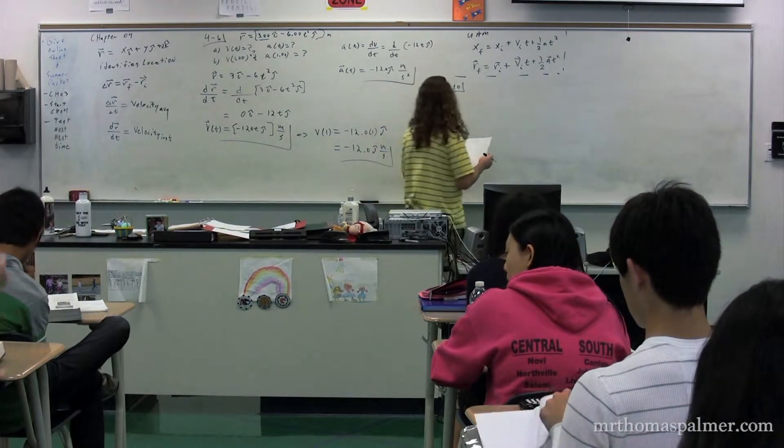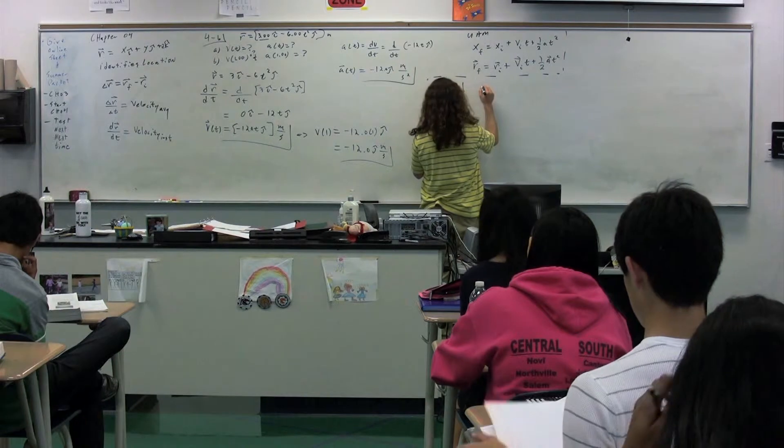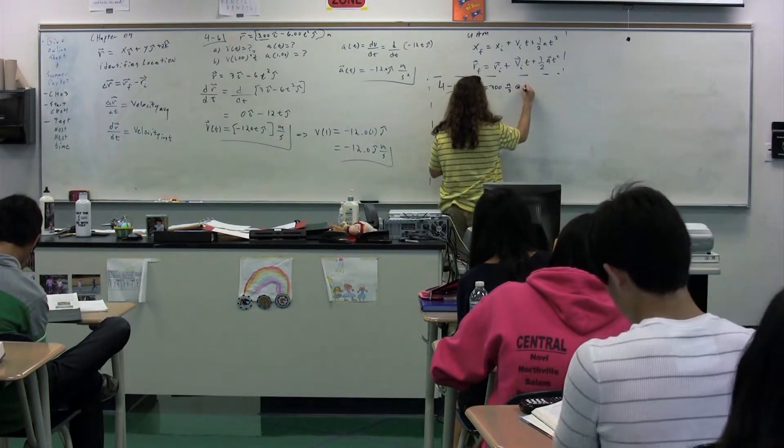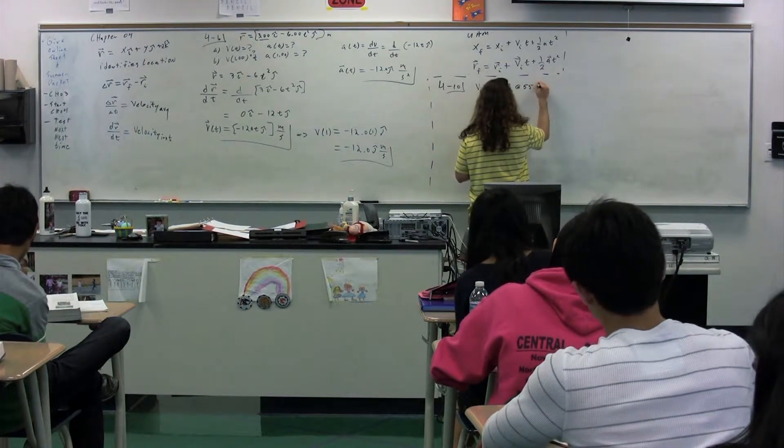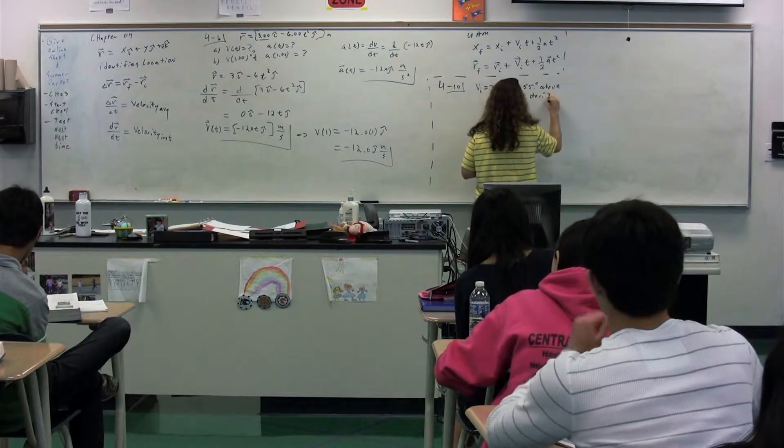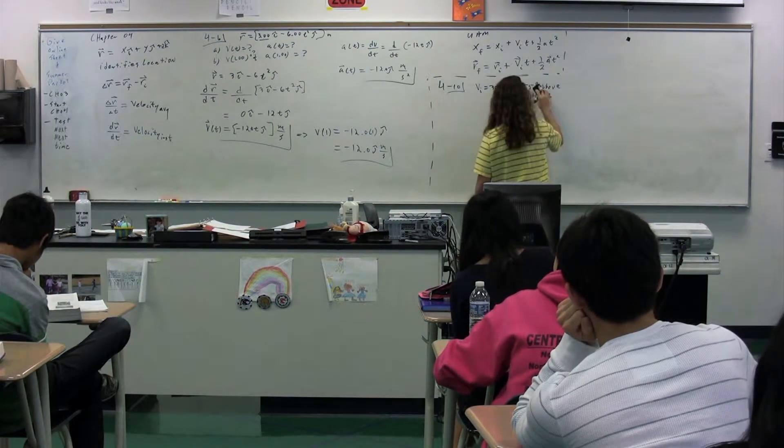So problem 10, chapter 4. Flanagan, could you please read the problem for me? All right. To start an avalanche on a mountain slope, an artillery shell is fired with an initial velocity of 300 meters per second at 55.0 degrees above the horizontal. Stop for a second.